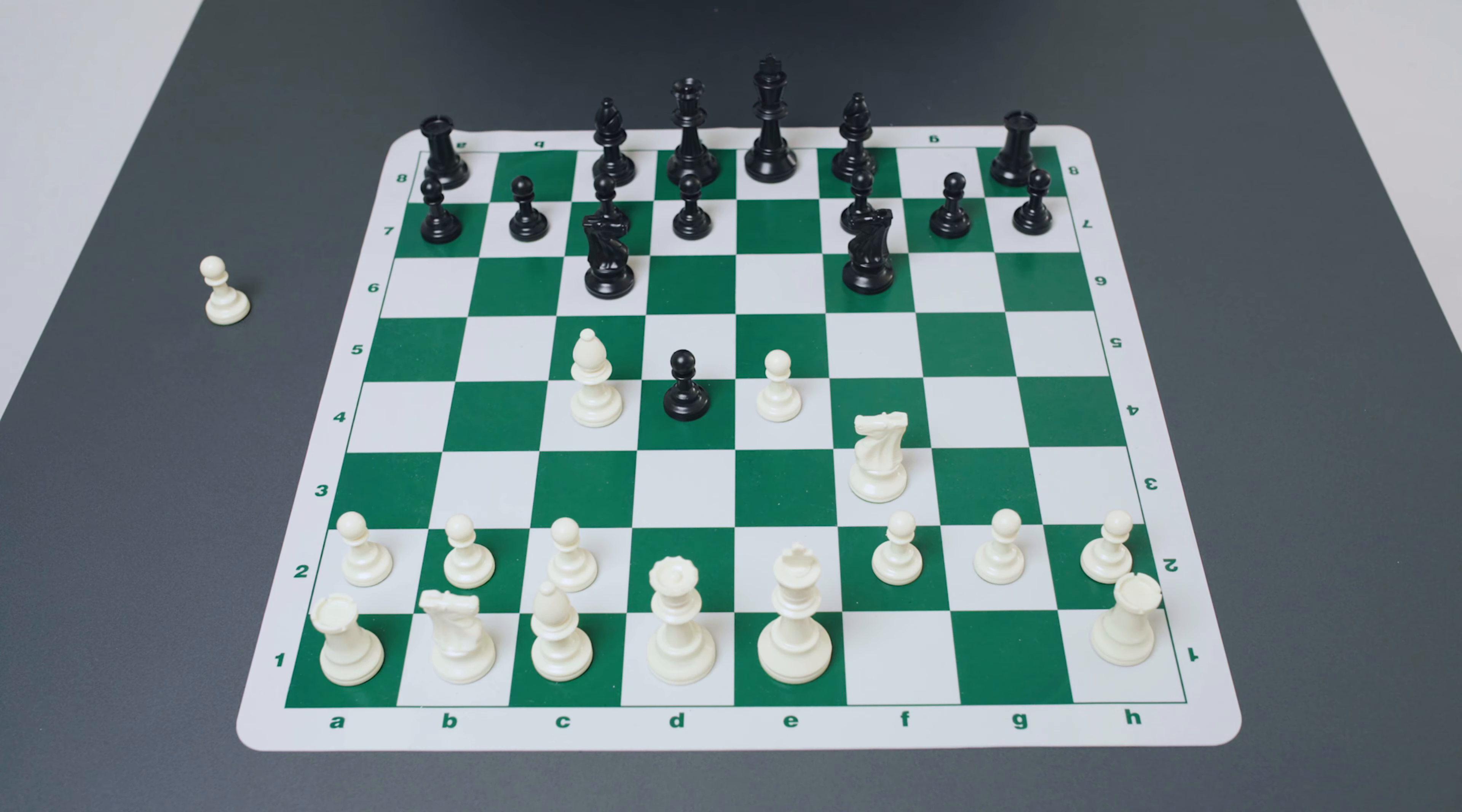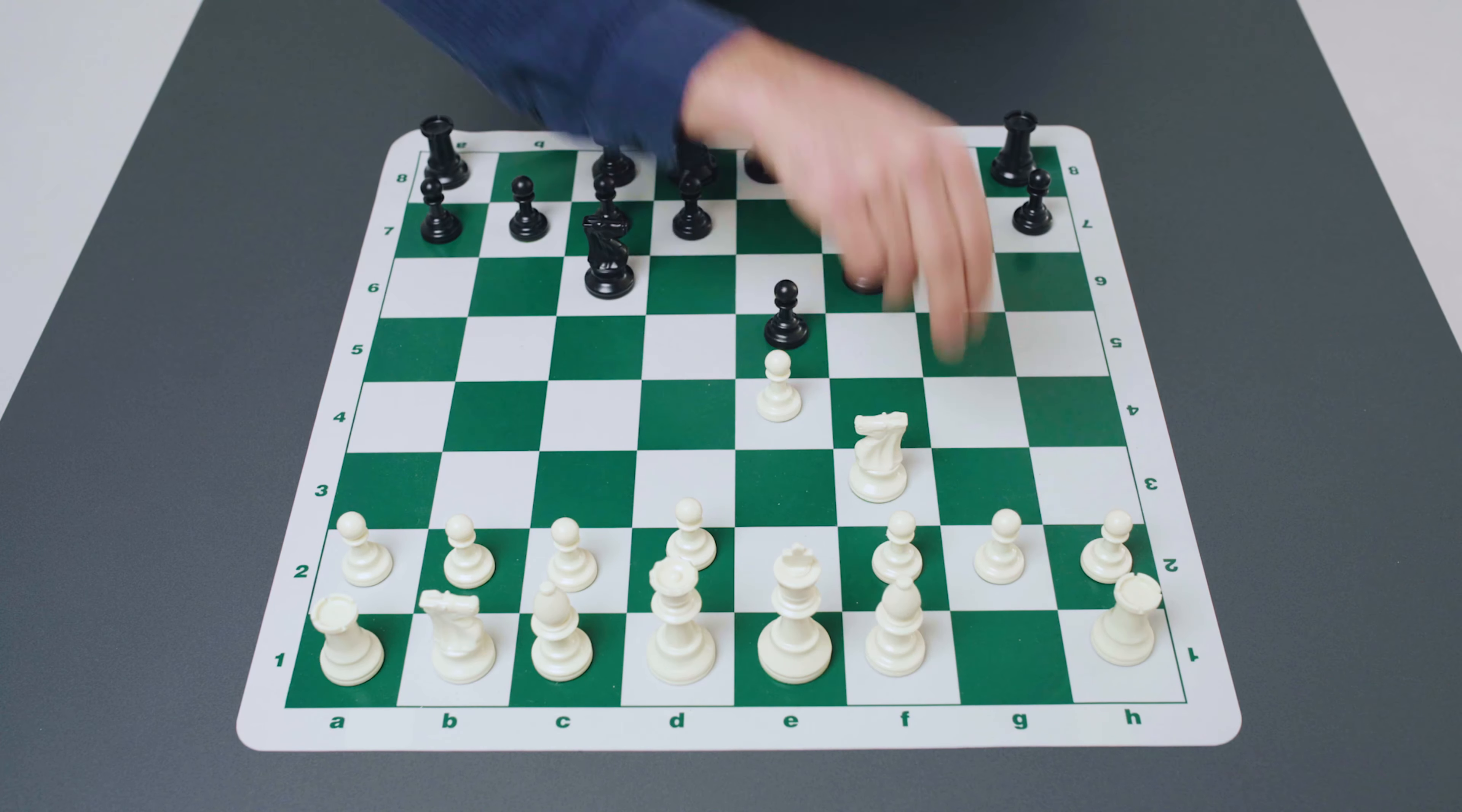And from here, after black's main move pawn takes d4, in this position here we have arrived via the two knights move order at the Scotch Gambit.